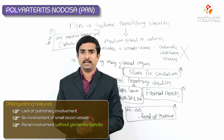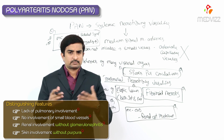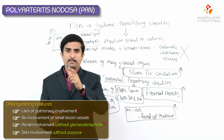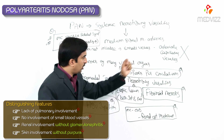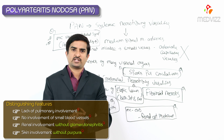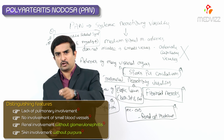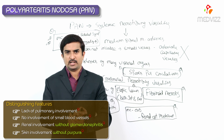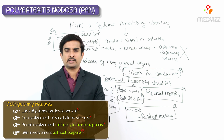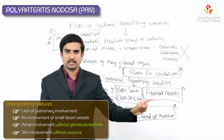Skin involvement in PAN occurs without purpura, because purpura results from small vessel involvement, and small vessels of the skin are not affected in PAN. To summarize the distinguishing features: skin involvement without purpura, renal involvement without glomerular nephritis, sparing of pulmonary circulation, and only medium-sized muscular arteries affected.